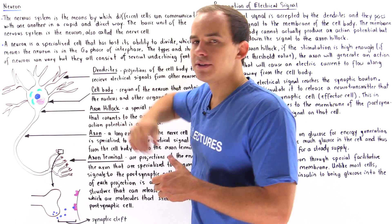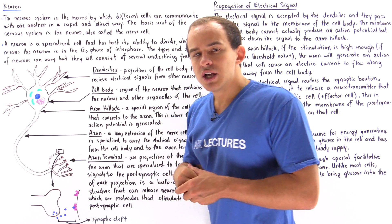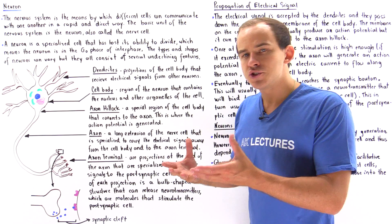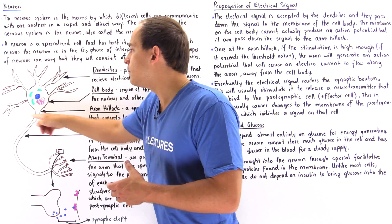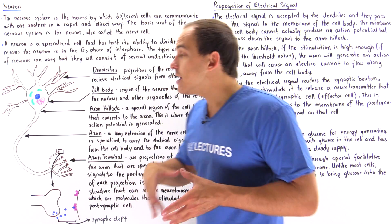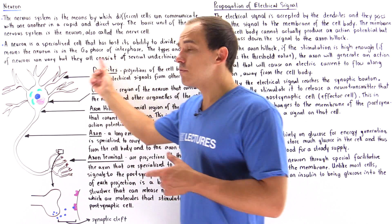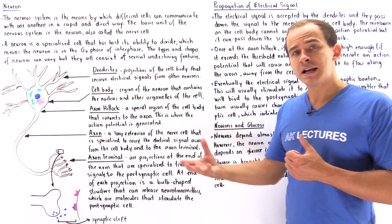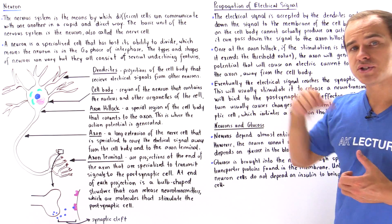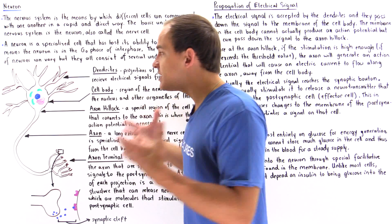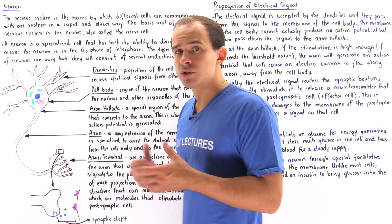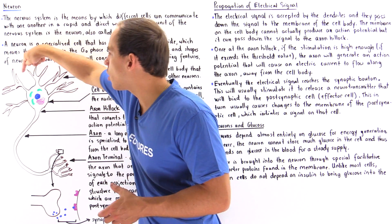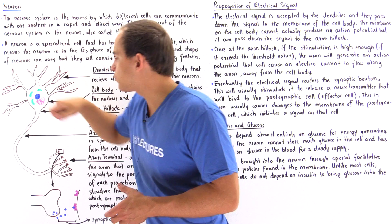Let's begin with our dendrites. The dendrites are basically projections that come off of our cell body. The purpose of these dendrites is to receive the electrical signal that comes from other cells and to send that electrical signal to other parts of our neuron.